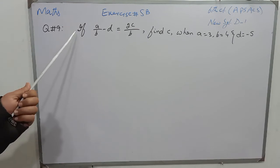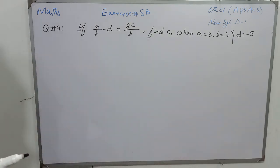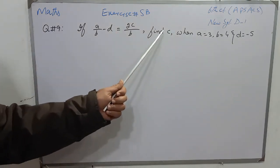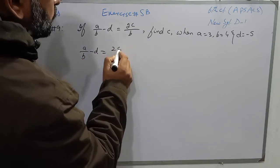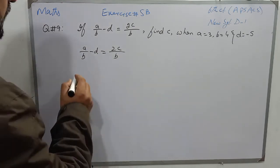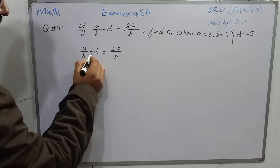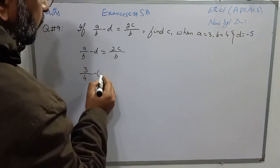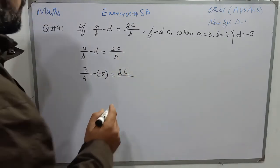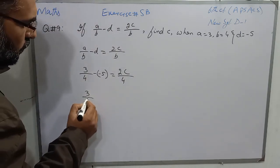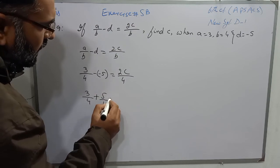Question number 9 of the same exercise is: if A over B minus D is equal to 2C over B, then find C when A is 3, B is 4, and D is minus 5. I will replace the values of A, B, and D, and find C. First I write the formula: A over B minus D is equal to 2C over B. Replacing values: 3 over 4 minus, and the value of D is minus 5 so it is written in brackets, is equal to 2C over 4. When this minus and that minus multiply, it becomes plus 5, written as 3 over 4 plus 5 over 1.